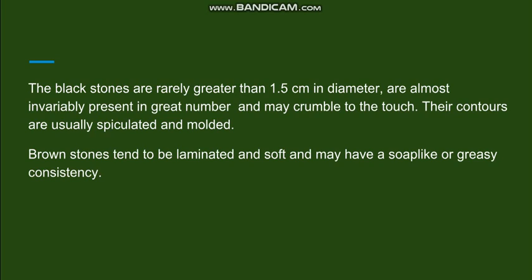Regarding the morphology: black pigment stones are very small in size, rarely greater than 1.5 cm in diameter, and are present in very great numbers. They are very soft and mostly crumble to touch; their contours are spiculated and molded. Brown pigment stones are slightly different — they tend to be laminated, soft, and have a greasy consistency.